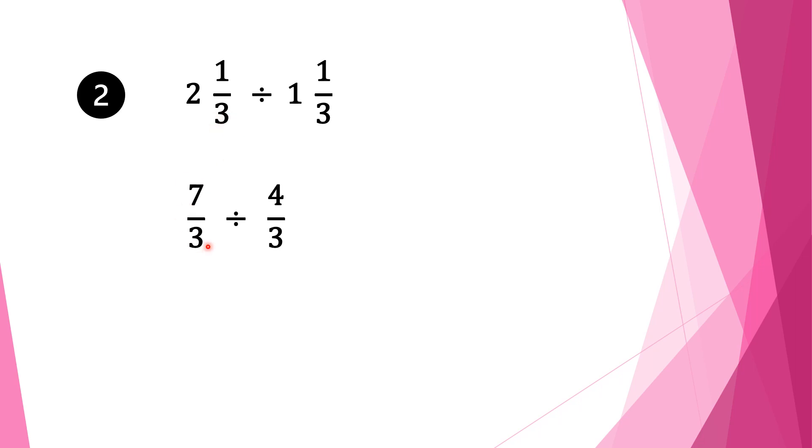Moving on to question 2. We have 2 and 1 third divided by 1 and 1 third. Again with mixed fractions, we convert into normal fractions. So 3 times 2 is 6, plus 1 is 7, and we bring our denominator 3 as it is. We bring the division sign as it is. For the second fraction: 3 times 1 is 3, plus 1 is 4, and we bring denominator 3 as it is.